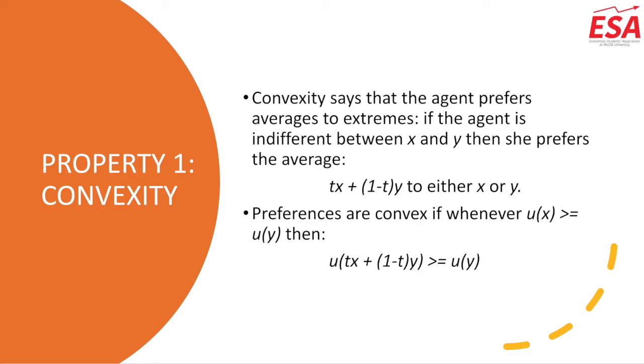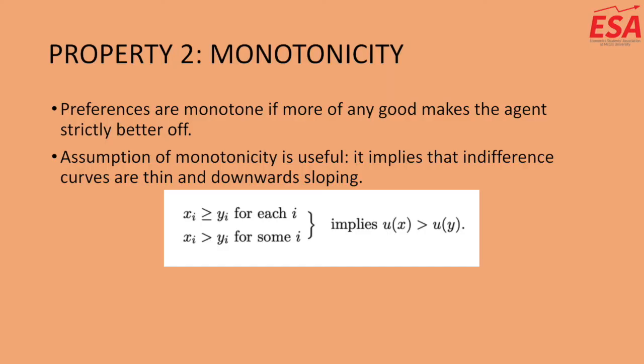Moving on to our second property: monotonicity. We say that preferences are monotone if more of any good makes the agent strictly better off. Assumptions of monotonicity are useful because it implies that indifference curves are thin and downward sloping — very important to be able to arrive at a single answer and represent indifference curves on a graph. Otherwise it would violate mathematical laws and be impossible to graph. The mathematical relationship for monotonic preferences is shown in the middle of the slide.